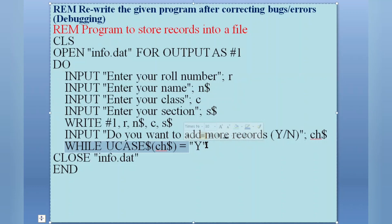After that, WHILE UCASE$(CH$) = "Y". Which loop we are using here? We are using DO WHILE loop. So in DO WHILE loop, we cannot write here WHILE directly. We need to write LOOP WHILE. So this is also another error.